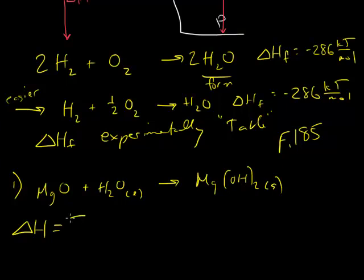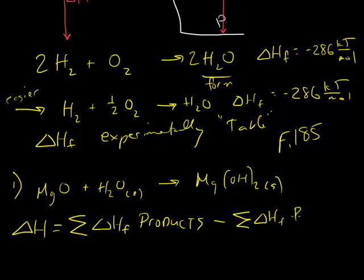So we take the sum of the heat of formation data of all the products. And we subtract because the reactants are going through the opposite process. They're breaking down, not forming. So we subtract the sum of the heat of formation of the reactants.